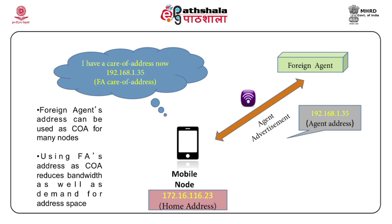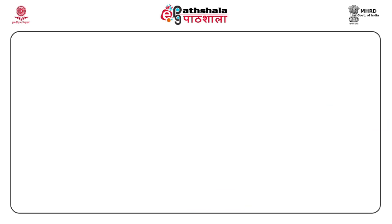It also reduces bandwidth. Because if the care of address is the address of the foreign agent, it will be the end of the tunnel and will decapsulate the packet at its level. So, when the packet is sent from the foreign agent to the mobile node, it will not be encapsulated, hence saving bandwidth.